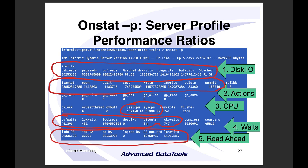Deadlocks should be zero; deadlock timeouts should be zero. These indicate coding problems in the application — how it's acquiring locks — and must be fixed in the application, not by a DBA. Checkpoint waits tells you how many times someone had to wait because of a checkpoint — fewer checkpoint waits is better.